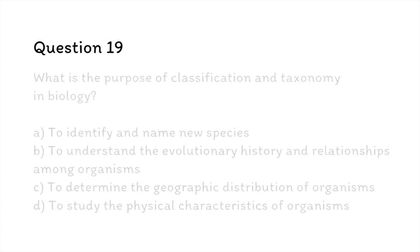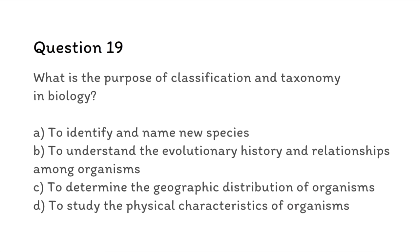Question 19: What is the purpose of classification and taxonomy in biology? A. To identify and name new species. B. To understand the evolutionary history and relationships among organisms. C. To determine the geographic distribution of organisms. D. To study the physical characteristics of organisms. The correct answer is B. The purpose of classification and taxonomy in biology is to organize living organisms based on their evolutionary history and relationships to each other, allowing scientists to better understand the diversity of life and how different species are related.